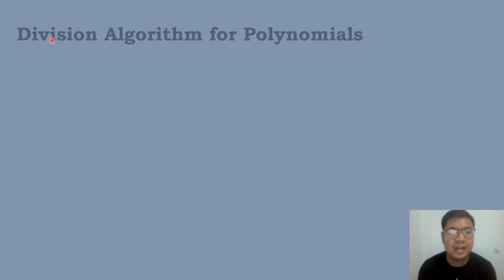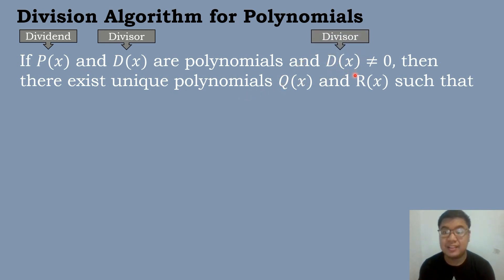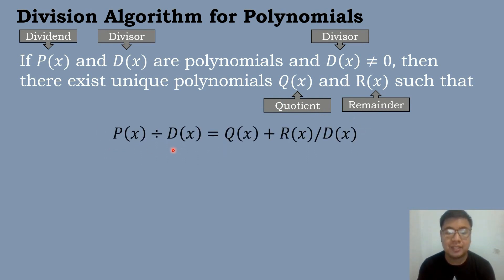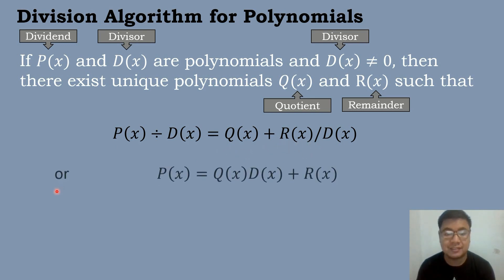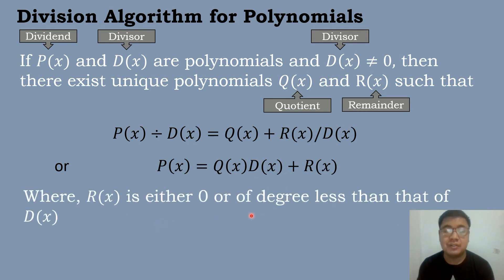Let's have first the division algorithm for polynomials. If P of X, the dividend, and D of X, the divisor, are polynomials, and D of X is not equal to 0, then there exist unique polynomials Q of X, the quotient, and R of X, the remainder, such that P of X divided by D of X equals Q of X plus R of X over D of X. Or, P of X equals Q of X times D of X plus R of X, where R of X is either 0 or of degree less than that of D of X.